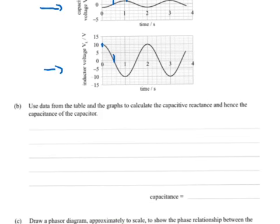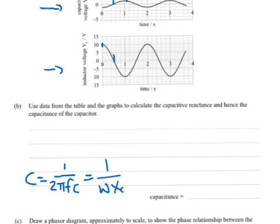B: use data from the table in the graphs to calculate the capacitive reactance and hence the capacitance of the capacitor. So we're kind of stepping through this. The final thing we want is the capacitance, which we know is 1 over 2πFc, or another way that we might look at that is 1 over omega and then the reactance Xc.